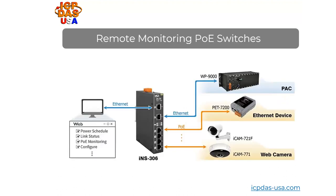You can remotely monitor network activity with managed switches through the web interface. You can also remotely monitor and control Power over Ethernet devices with our INS-306 six-port IoT Ethernet switch with four PoE ports. It's configurable over a web page, and you can set it up to power devices based on a schedule as it supports NTP clock synchronization. You can also remotely power devices like IP cameras or PET-7000 data acquisition modules on or off through a web page. We offer a wide range of analog and digital Power over Ethernet IO modules.